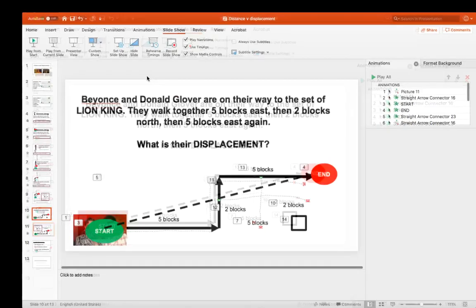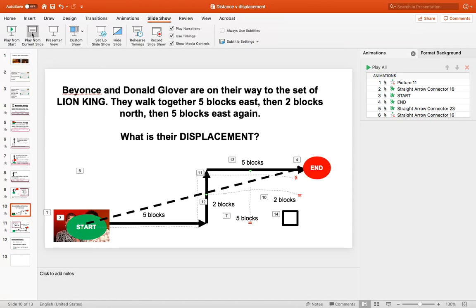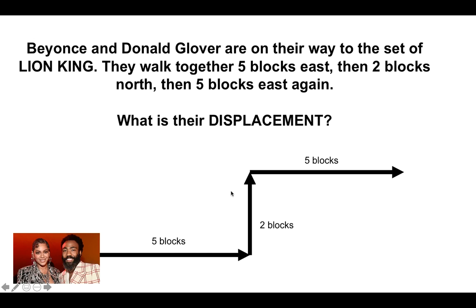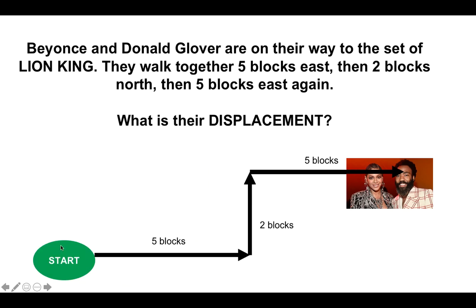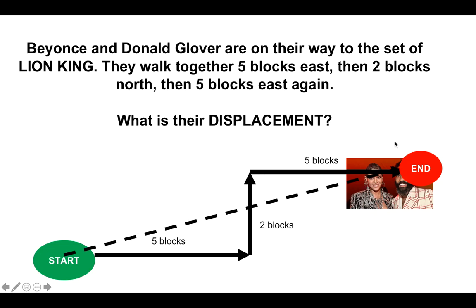Beyoncé and Donald Glover are on their way to the set of Lion King and they're walking together — five blocks east, then two blocks north, then five blocks east. Finding their displacement looks complicated, but remember displacement is a direct, straight line from start to end. Here's the path they travel, here's where they started, here's where they ended. To figure out the displacement, draw a direct straight line from start to end.